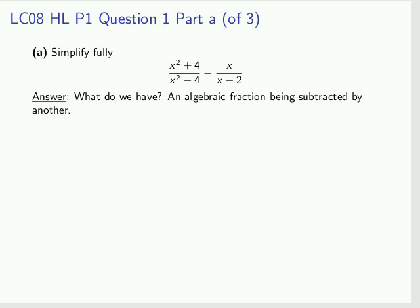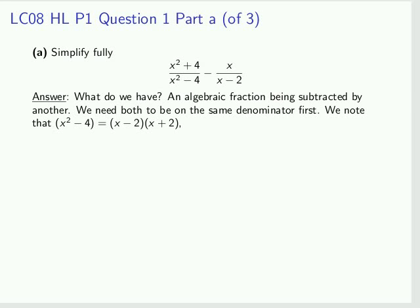What do we have? We have an algebraic fraction being subtracted by another. What we'd like is for both denominators on the two fractions to be the same, and we see that the denominator on the second fraction need only be multiplied by x plus 2 to equal the denominator on the first fraction.